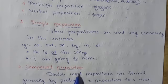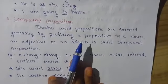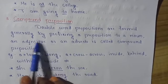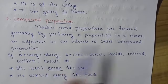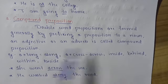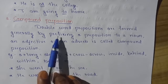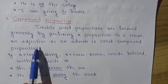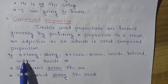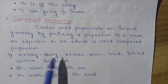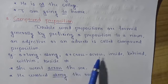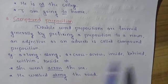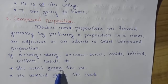The second one is compound preposition. Double word prepositions are formed generally by prefixing a preposition to a noun, an adjective, or an adverb. For example: a plus long becomes along; a plus cross becomes across. Other examples include inside, behind, within, beside, etc. For example: She went across the sea. He walked along the road.